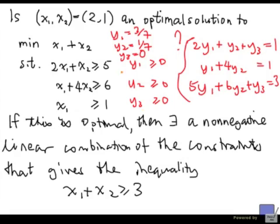In this case, we didn't do too much work to show that x1, x2 equal to 2, 1 is an optimal solution, because all we needed to do was to solve this system, which had a unique solution. But this is just a 3 by 3 system, and it had a unique solution. So it wasn't something that was too difficult.